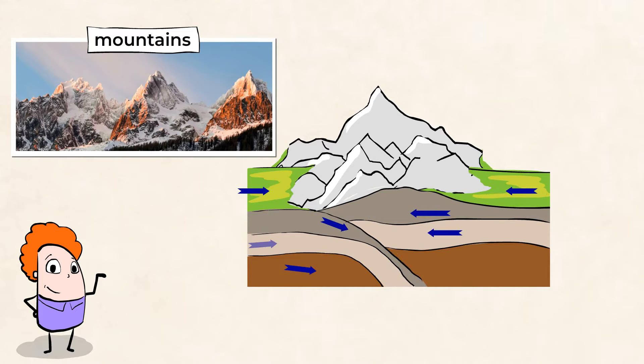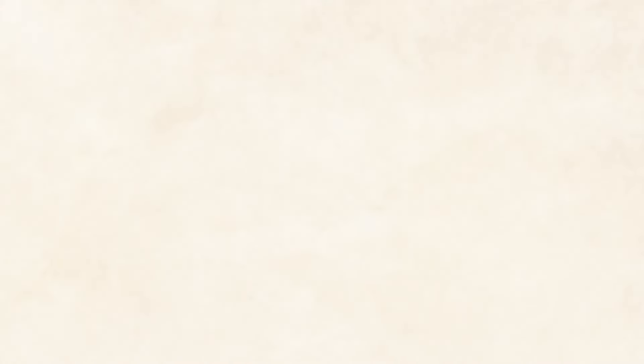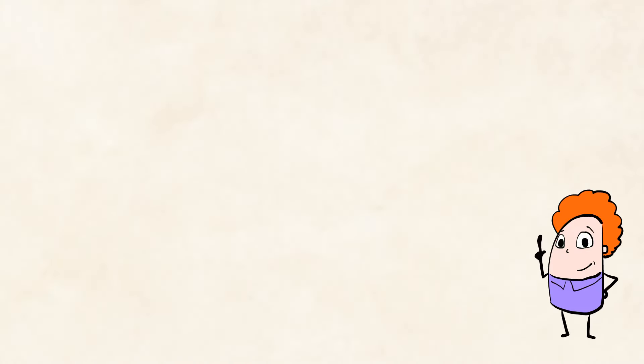They have steep sides and are very tall. And mountains really stand out in a landscape. This type of landform can be found on all seven continents on Earth. In fact, there are over a million mountains worldwide.